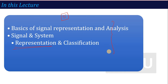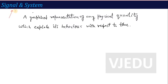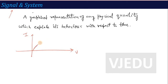So let's start our lecture on Basics of Signal Representation and Analysis. What is a signal? If I represent something in a graph — for example, we have seen VI characteristics where a quantity, current, varies according to voltage — this graph represents the behavior of current with respect to voltage.